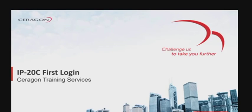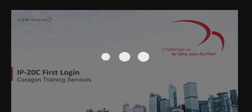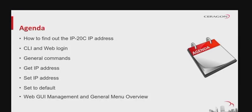This module introduces the concept of a first login into the IP20C element. Topics covered include: initial connection to the IP20C unit; what to do if you don't know the IP of the element; how to establish a connection to the command line interface; a brief overview of the homepage after a successful login; how to find out and change the IP of your network element; how to set the unit to factory default configuration; and a brief overview of the basic web menu elements for managing your equipment.